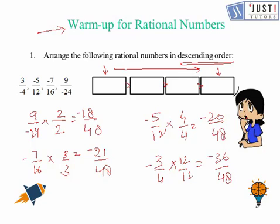Now we arrange them in descending order. The biggest number is minus 9 over 24. The next is minus 5 over 12, then minus 7 over 16, and finally minus 3 over 4. So this is the answer.